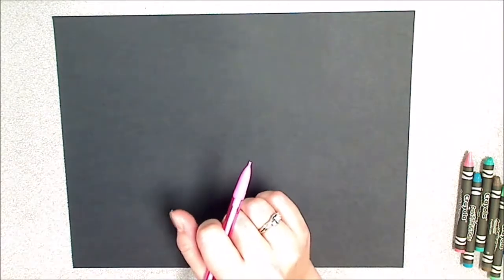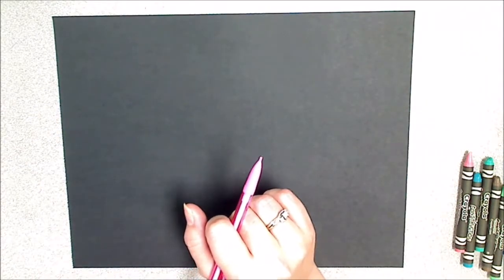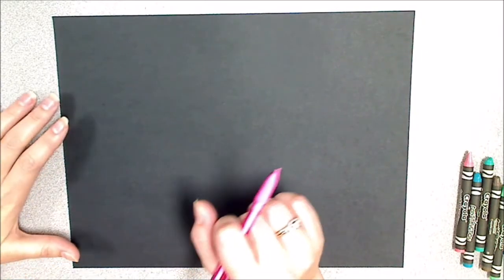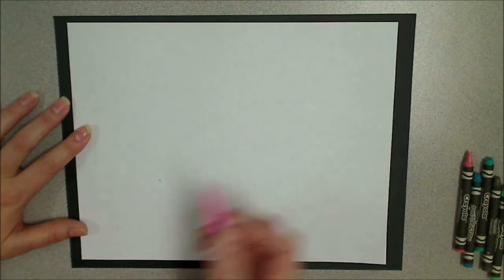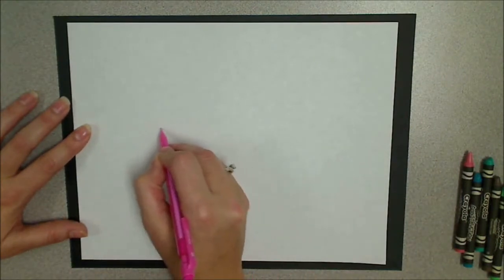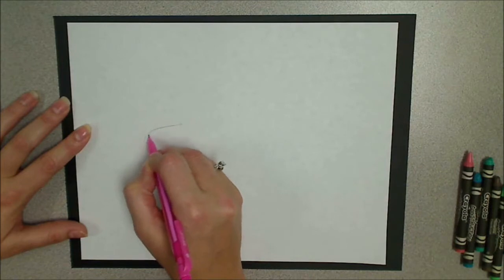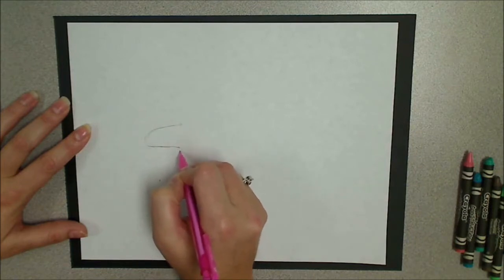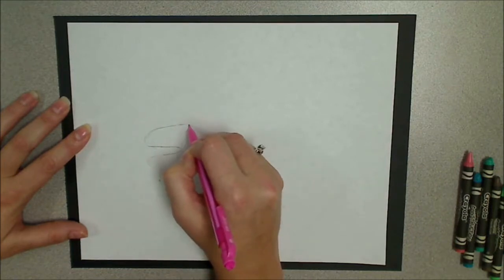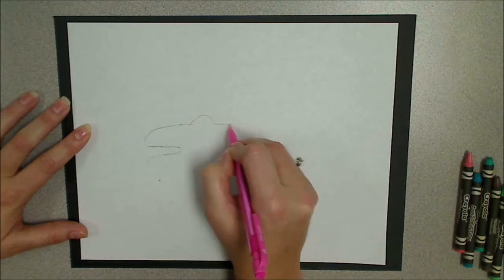So step number one is going to be drawing out your animal, and you need to practice your animal on a separate piece of paper before you start to draw it on your regular paper. So I want to practice drawing an alligator because there are lots of alligators. But you don't have to draw a perfect alligator. You're drawing more like a cartoon alligator.